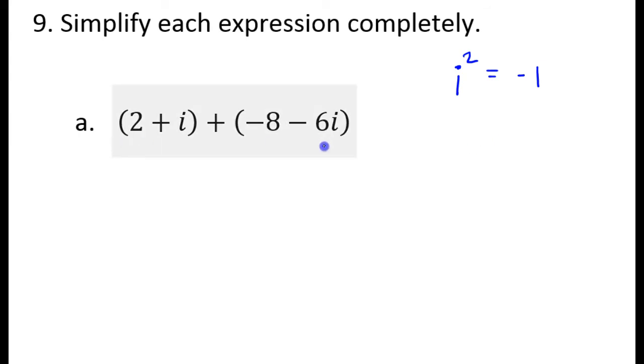But that's not happening here, so we're just combining like terms, so 2 plus negative 8 is negative 6, and i minus 6i is negative 5i. So that would be it for part a.